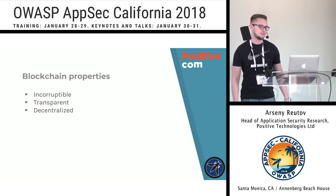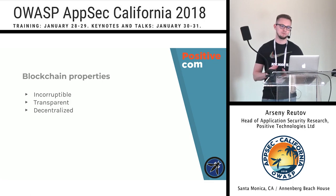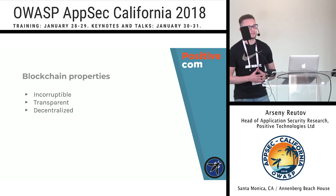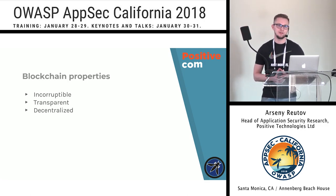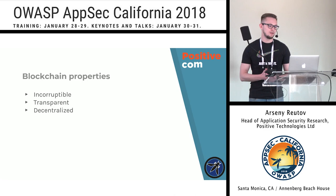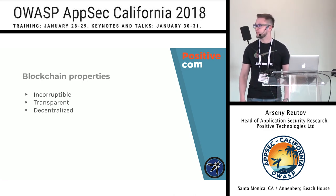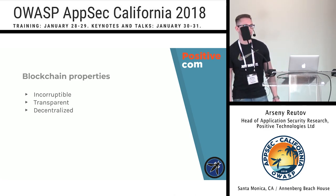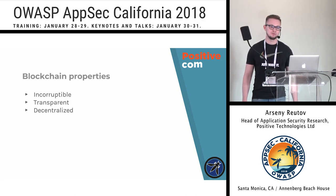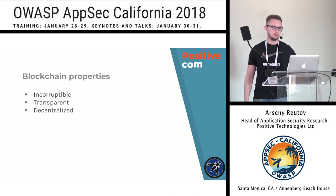That is why blockchain is incorruptible — you cannot reverse its state, it always moves only forward. It is also transparent, meaning you can see all the transactions in each block. And it is also decentralized, meaning that if a single node in the blockchain network goes down, it won't make the whole network unavailable.